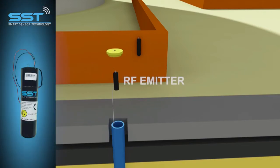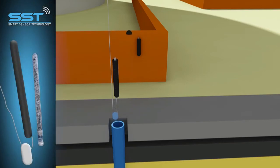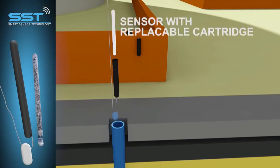The emitter, screwed in the well cap, is connected to the sensor that is floating in the groundwater with its replaceable cartridge.